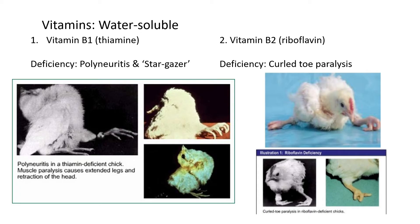The first water-soluble vitamin is vitamin B1, also referred to as thiamine. Sometimes in tests they refer to thiamine and you have to remember it refers to B1. The deficiency of B1 causes polyneuritis and stargazer. Poly means many, and neuritis refers to neurons — so basically the animal can't move its muscles, legs, or arms because the nervous system is affected. In pictures of the chicks, this shows the stargazer position — the animal tilts its neck back and it looks like it's staring at the stars. The legs are stiff and it can't stand — that's the polyneuritis part.